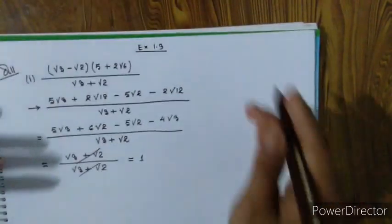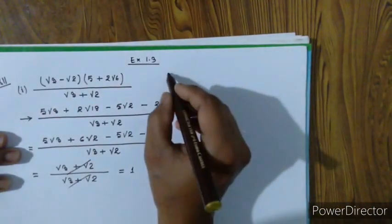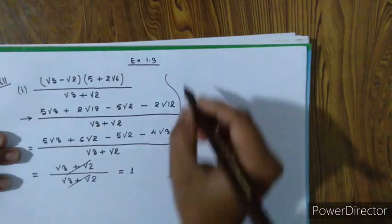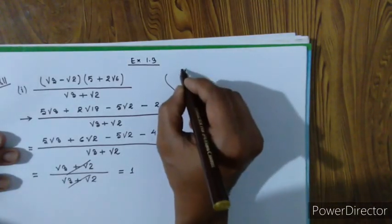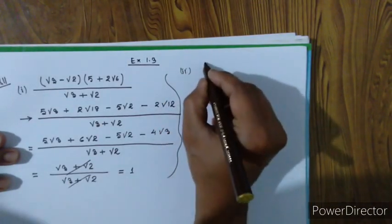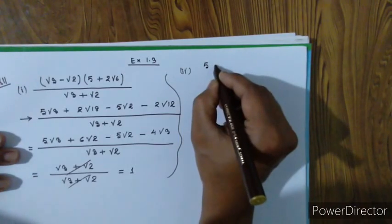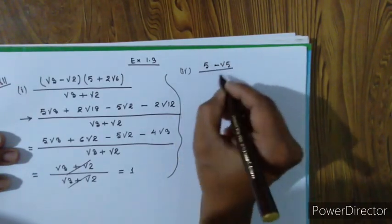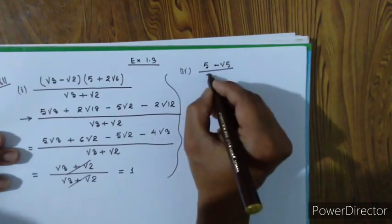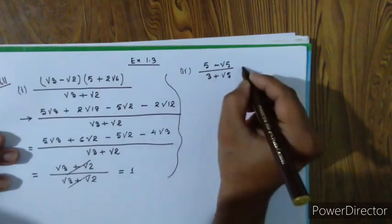Question number two. Five minus root five, by three plus root five, plus two root five.